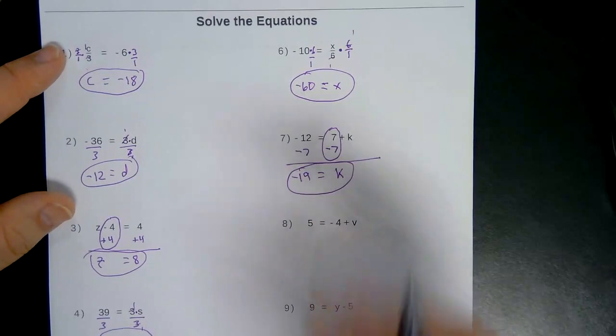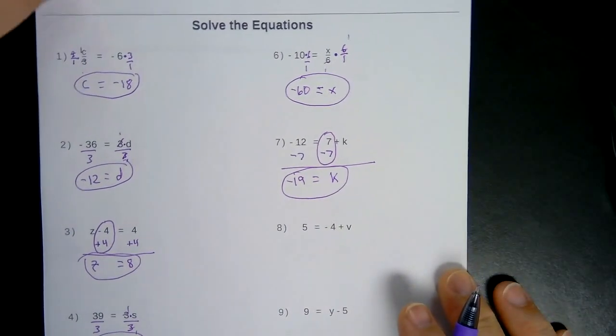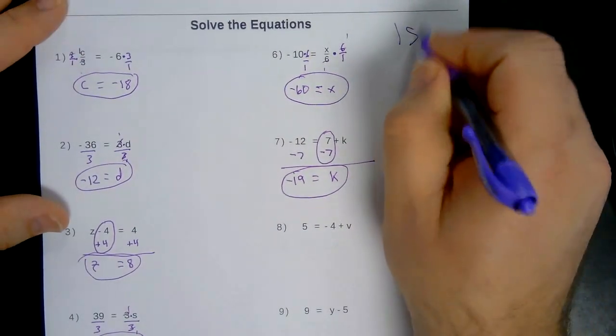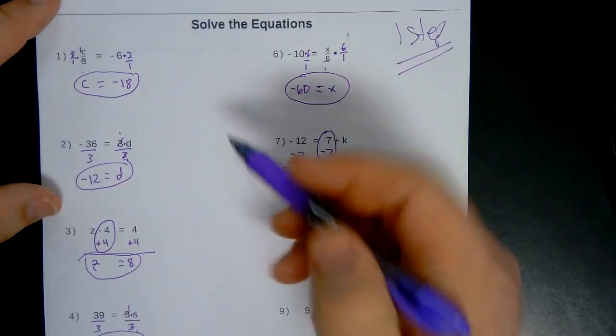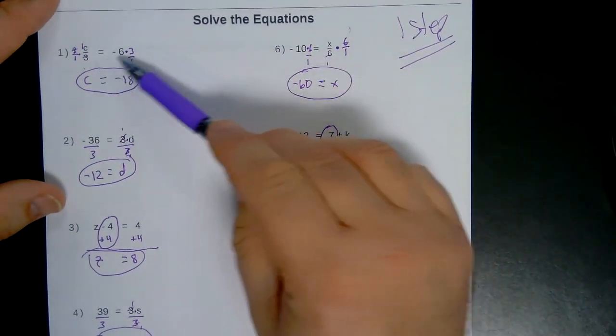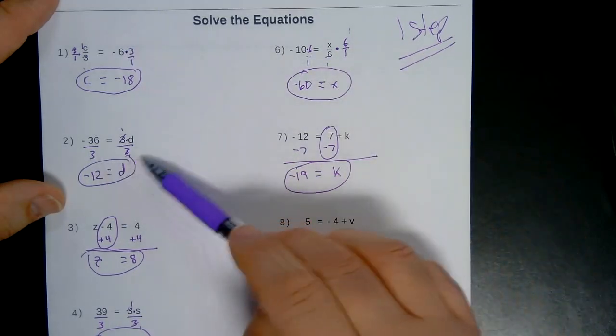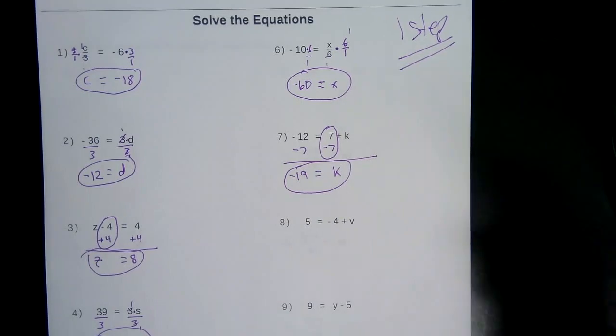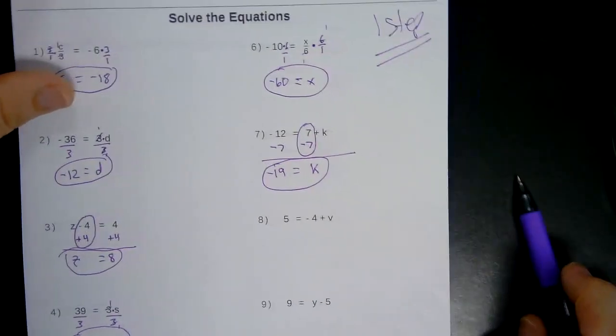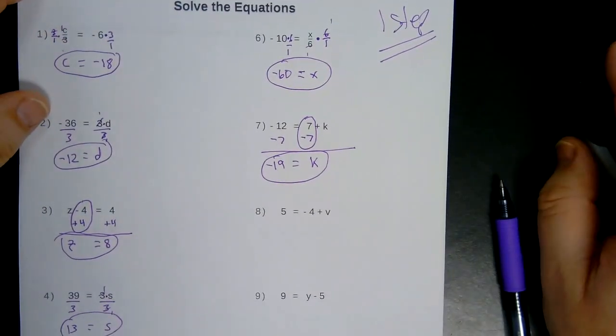So I'll let you finish up the rest of them. Hopefully that's enough to get you going on this one. These are one-steppers. One-step equations. Either you're multiplying both sides. You could be dividing both sides. You could add. Or you could subtract. Nice, easy one-step problems. It should be quick for you.